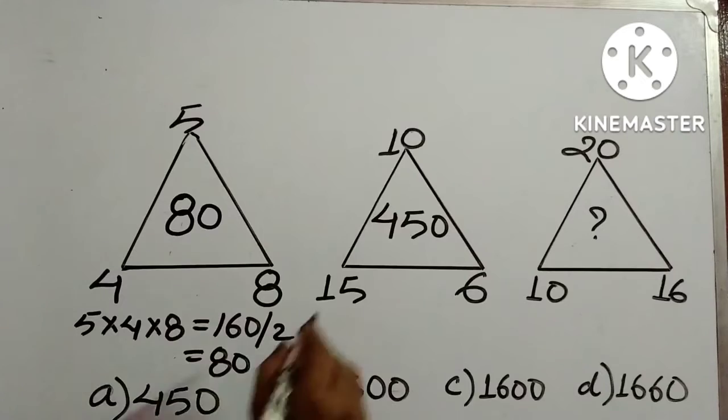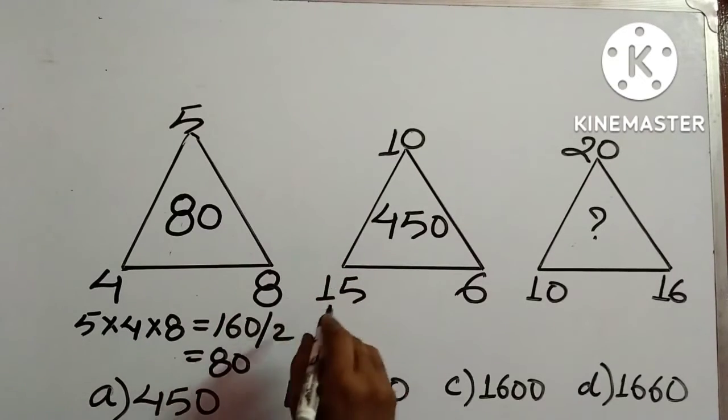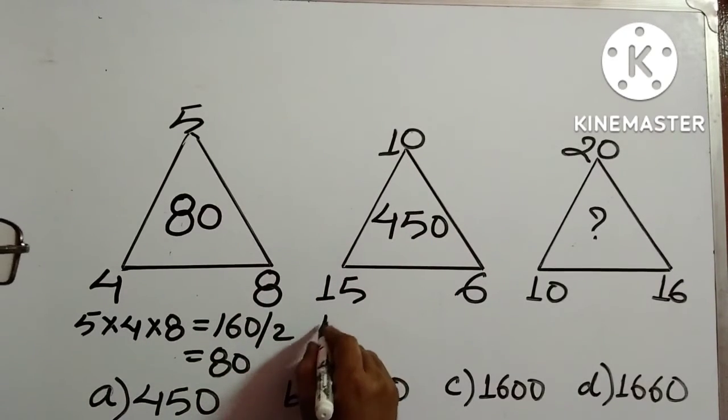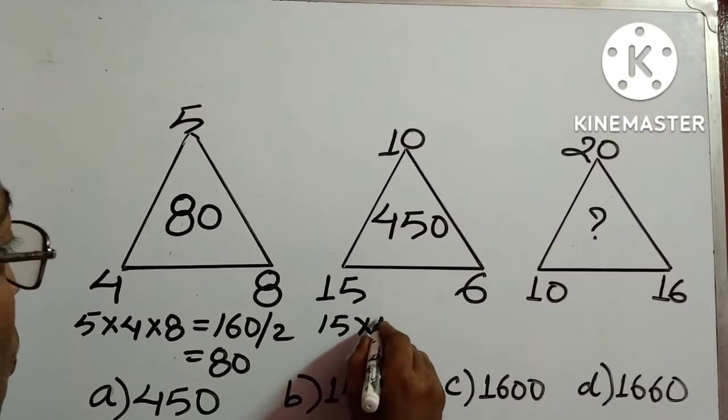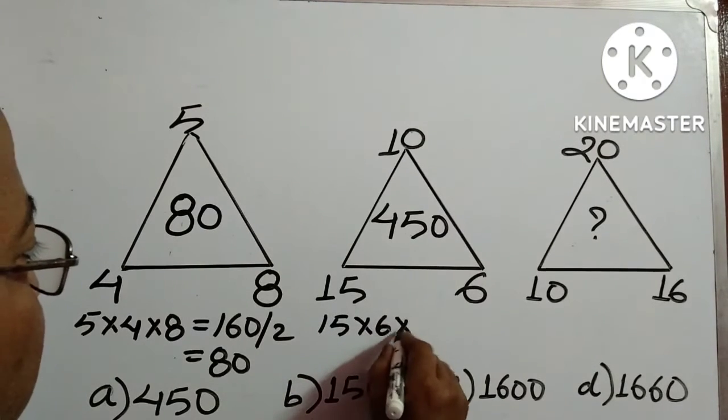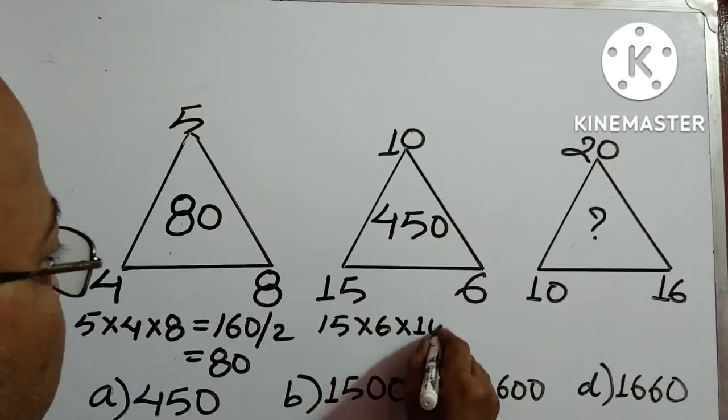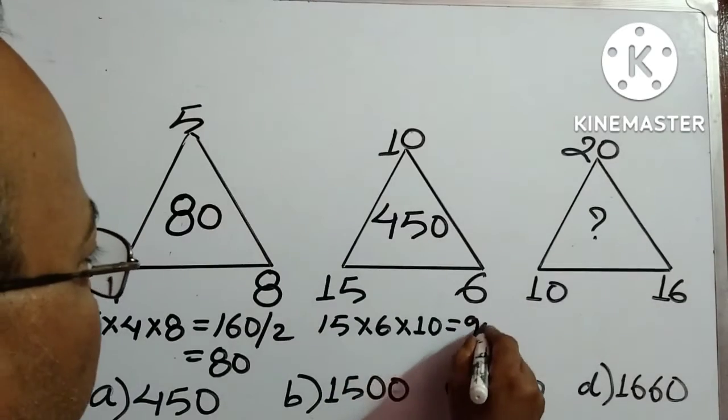So, 80 is given. Check over here whether this thing works or not. 15 into 6, 15, 6 are 90. 90 into 10 is how much? 900.